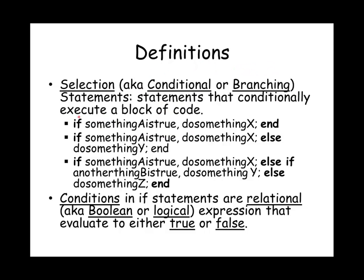In MATLAB, a selection statement starts with the word 'if' and ends with the keyword 'end'. Following the if keyword, you would have the condition that will be evaluated, followed by a comma or semicolon, followed by zero or more statements that will be executed when this condition is true.